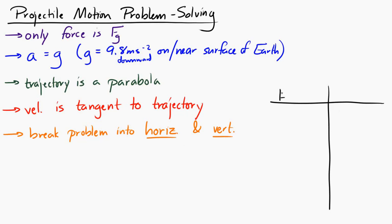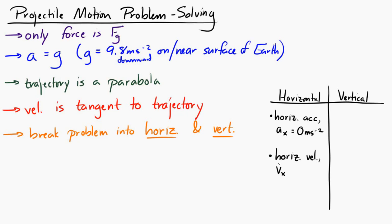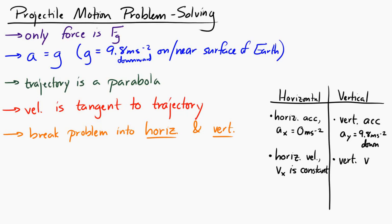In the horizontal direction, the horizontal acceleration ax is equal to 0 meters per second squared. If the horizontal acceleration is 0, then the horizontal velocity is constant. Vertically, the acceleration ay is 9.8 meters per second squared downward. Because it's accelerating vertically, the vertical velocity vy is changing.